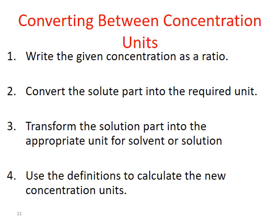In addition to calculating concentration directly from a description of the solution, you should also be able to convert from one concentration unit to another. The general steps are: first, write out the starting concentration as a ratio and separate it into numerator and denominator. Then convert the solute part in the numerator into the required numerator unit for the target concentration. Next, convert the denominator into the required denominator unit. Finally, plug the new numerator and denominator into the formula for the concentration you're solving for.